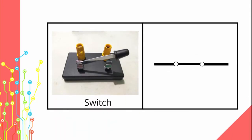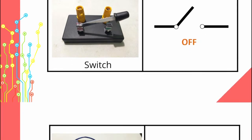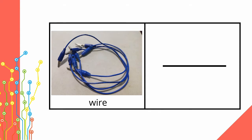Third is a switch. It is used to control the electrical energy that flows in the circuit. There are two symbols used for a switch — this symbol is used when the switch is on, and this is when the switch is off. Last is the wire. It serves as the path of the circuit on which the energy flows. It has a symbol of a line that connects all the parts of an electric circuit.